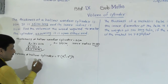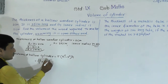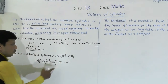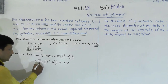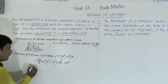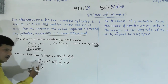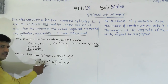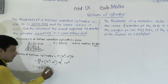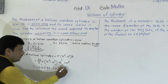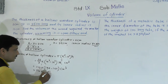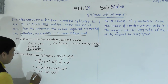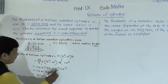Now calculating: Volume = 22/7 × (14² - 12²) × 35. Simplifying: 7 cancels with 35 to give 5, so we get 22 × 5 = 110. Then 14² = 196 and 12² = 144, so 196 - 144 = 52. Therefore Volume = 110 × 52 = 5720 cm³.